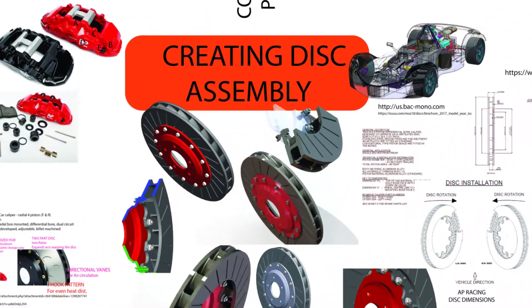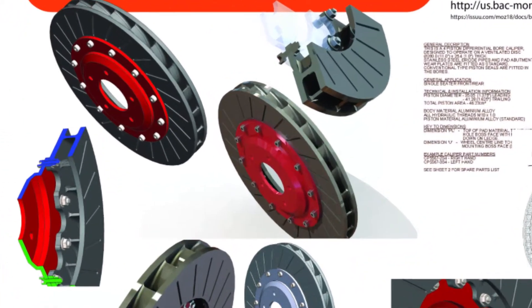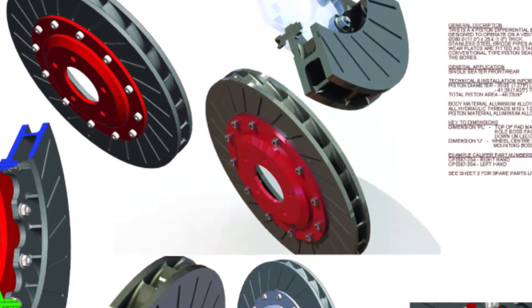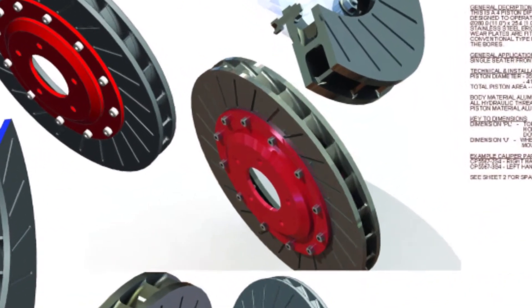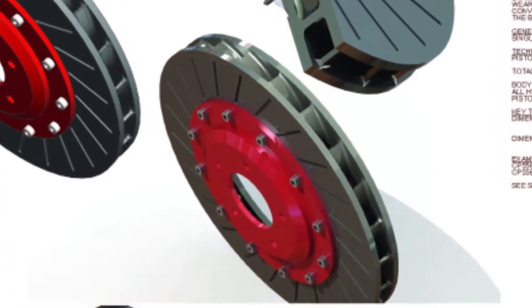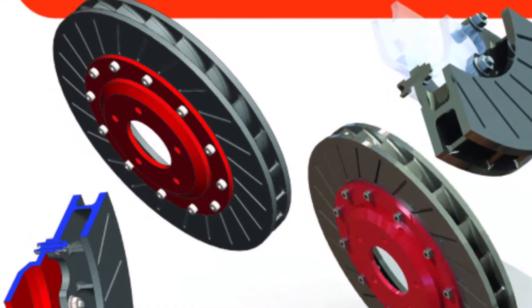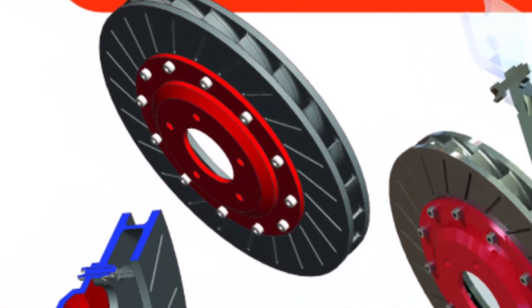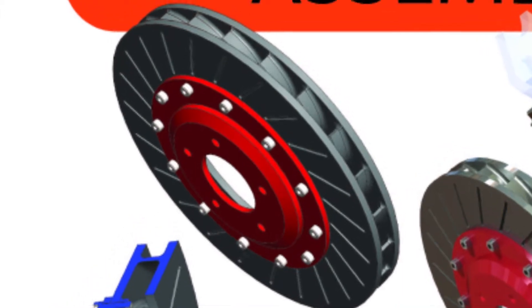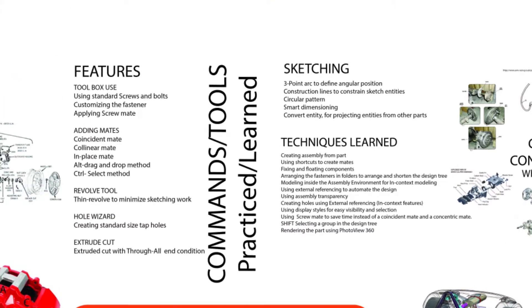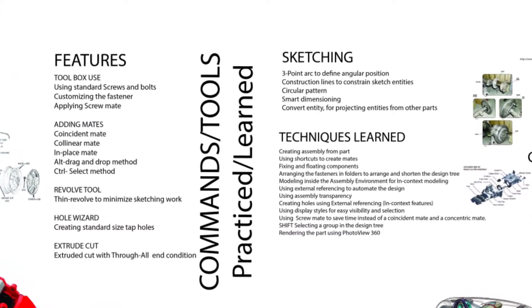Since we are done modeling the brake disc in the last lesson, let's start with the hub, followed by the assembly with the bolted fasteners. In this lesson, we are going to design the hub and then bolt it with the disc with toolbox fasteners to create an assembly.